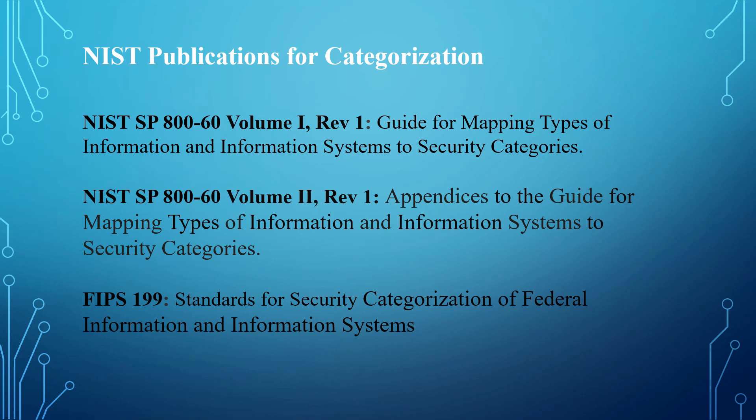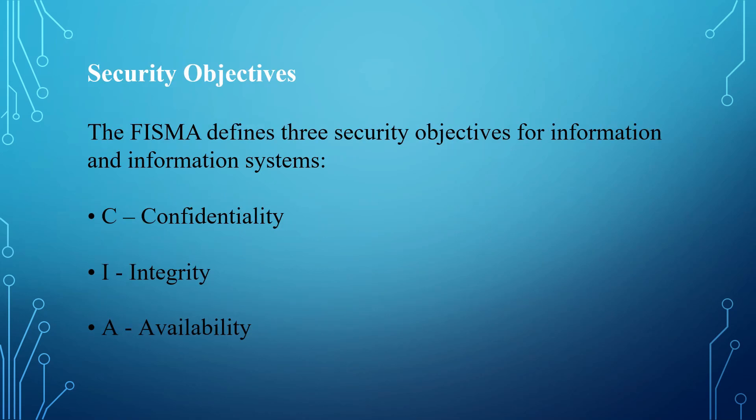FIPS 199 is based on the impact to the security objectives. FISMA defines three security objectives for information and information systems: confidentiality, integrity, and availability. These are the CIA triad.